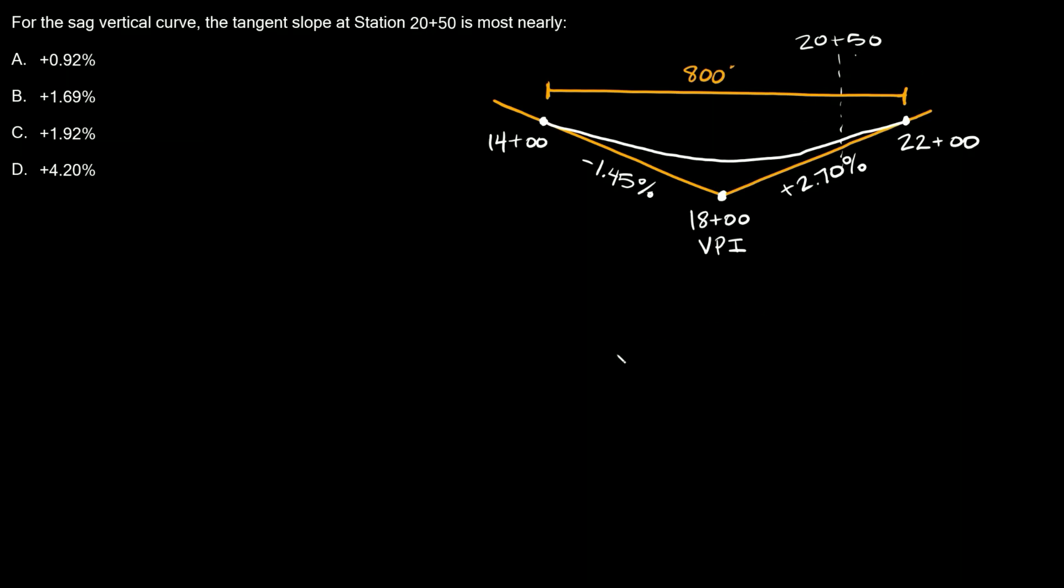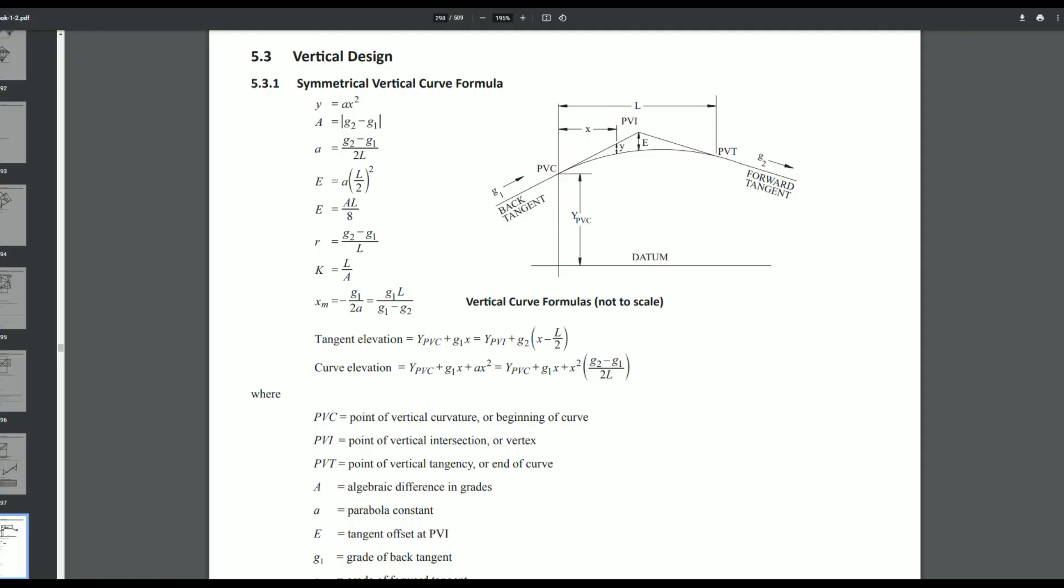Now in order to do this, there's a couple different ways. And they would both require formulas from the PE civil handbook, which you can find on the NCEES website for free. So I already have it open over here. This is chapter 5 and specifically section 5.3, which covers vertical design or vertical curves. Like I said, there's two different ways to do this.